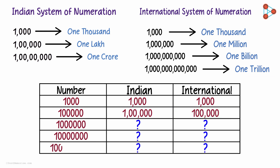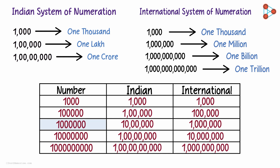Now can you write the following numbers in both the systems? Here are the results. The third number is 10 lakhs in the Indian system and 1 million in the international system. The fourth number is 1 crore in the Indian system — and in the international system it's 10 million. The next numbers: 100 crores in the Indian system and 1 billion in the international system.